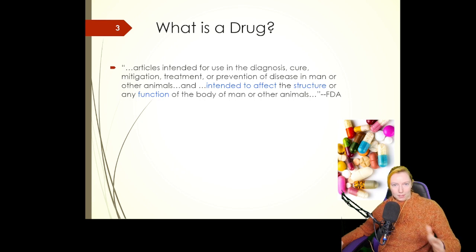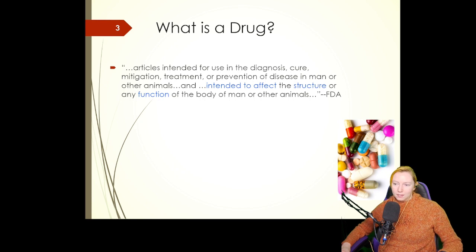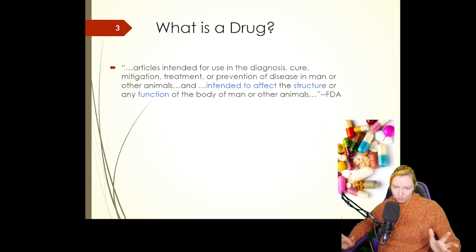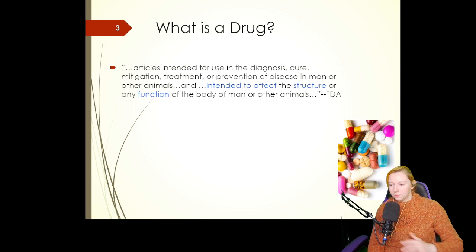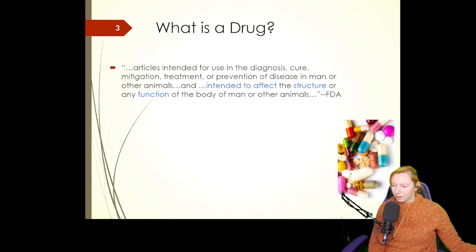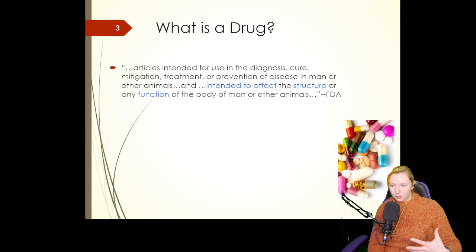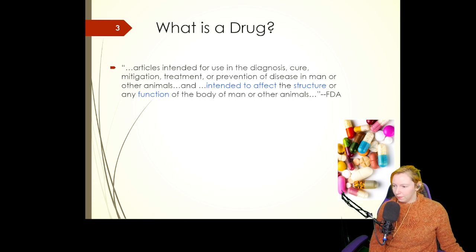It can be in man, it can be in other animals like Harry here, and it is intended to affect structure and/or function of the body in a biological system. These products are exogenous, which means that they're produced or created outside of the body. We also have endogenous chemicals that create effects within the body — that's a different thing.